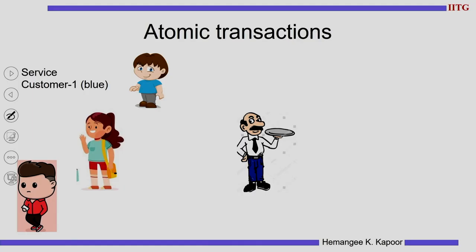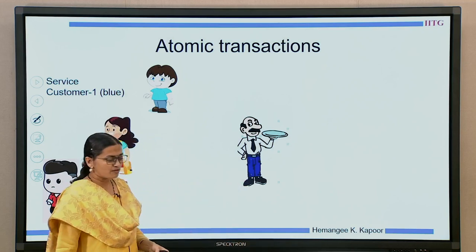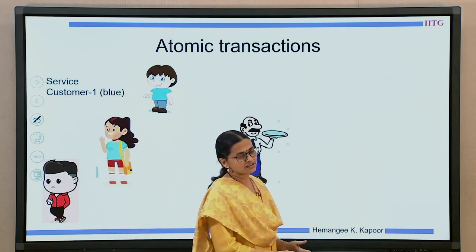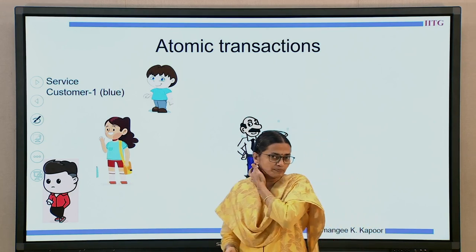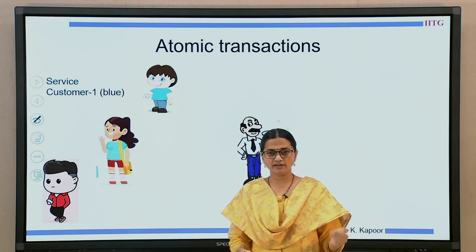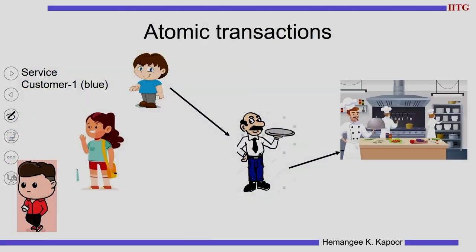Before that, let us understand what a split or an atomic transaction means. I have created an example where there are three customers visiting a restaurant for eating and they have ordered some food. Almost all of them reach together and the person in the blue shirt places the order. The waiter takes the order, goes to the kitchen, waits for the order to get ready, and then gives it to customer number 1.